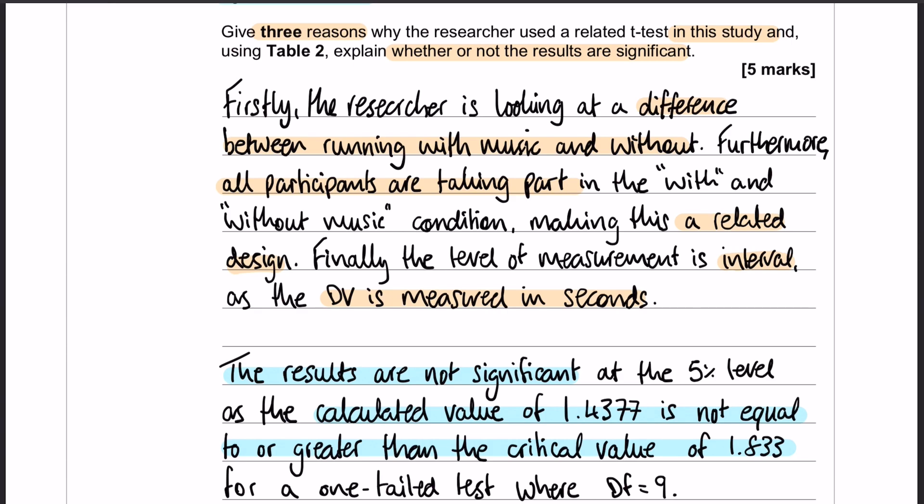There's your final two marks. Now just be careful with a question like this. Get your keywords and your key phrasings in. So, the results are not significant at the 5% level. Why? Because the calculated value, specify what the calculated value is, is not equal to or greater than the critical value. Again, state what it is so that the examiner knows that you know. And then in that final sentence, make sure that they are aware again that you know this is for a one-tailed test and that your degrees of freedom is nine. I know that they gave you that information in the stem, but it just makes for a nicer answer and it makes for a more complete answer if you can use all of the wording exactly as it's supposed to be used. It leaves no room for ambiguity and it makes sure that the examiner knows that you know what you're talking about.